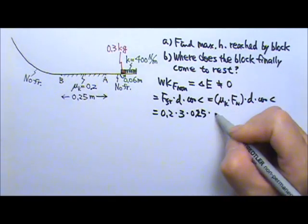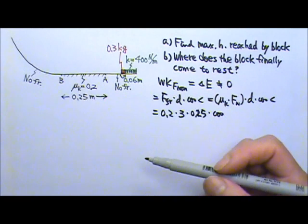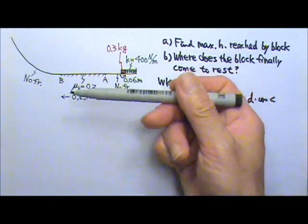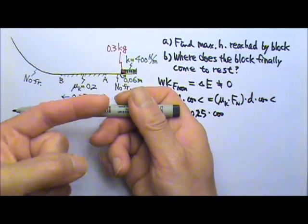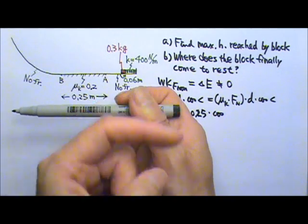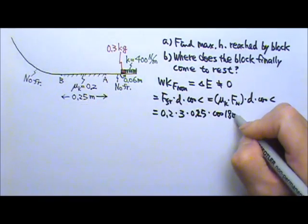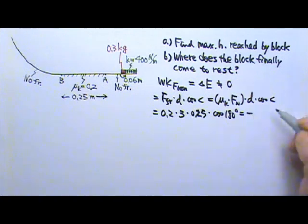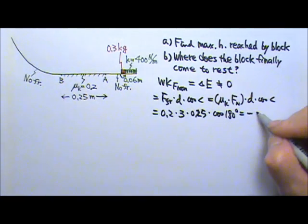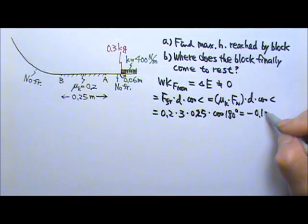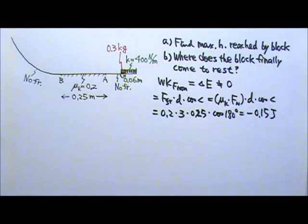The angle between friction and displacement, the block slides to the left, friction is in the opposite direction, so it's 180 degrees. So friction does negative work, this gives us negative 0.15. So friction does negative 0.15 joules of work. The negative means that friction is taking 0.15 joules of mechanical energy away and turns it into heat.